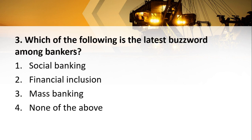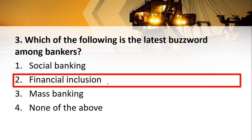Next question: Which of the following is the latest buzzword among bankers? Options are social banking, financial inclusion, mass banking, or none of the above. The answer is financial inclusion. Financial inclusion basically means taking people from all backgrounds, especially poorer sections, into the mainstream and including everyone in the financial system. Make sure you clarify these terms from different sources to make this MCQ series more fruitful.